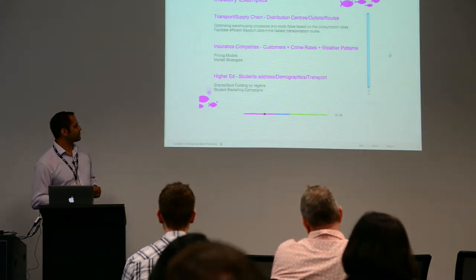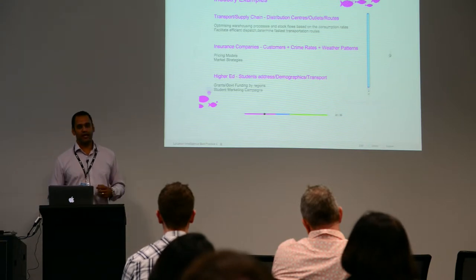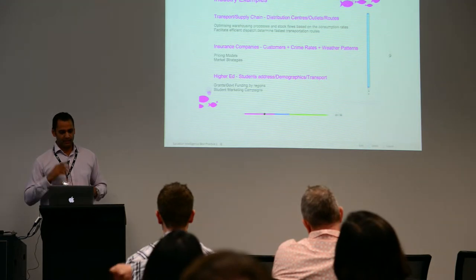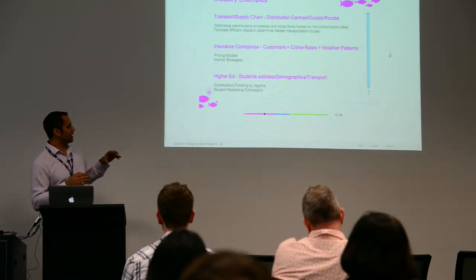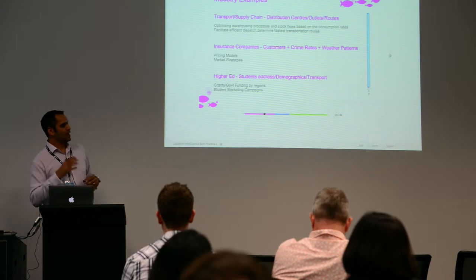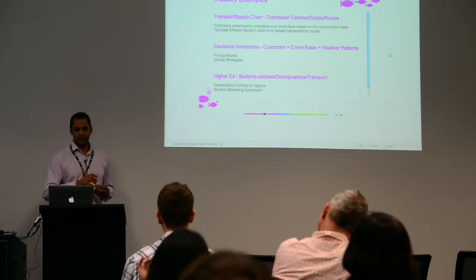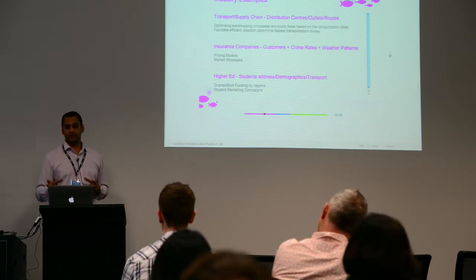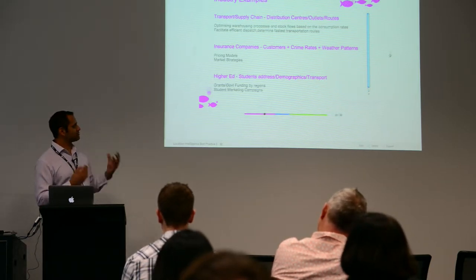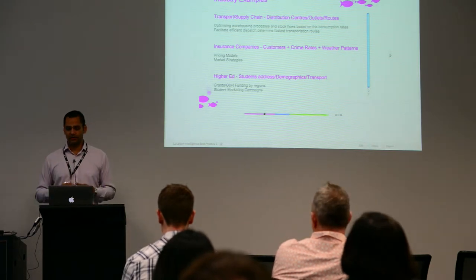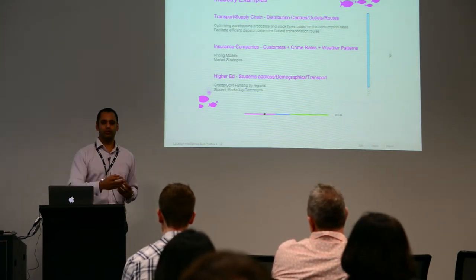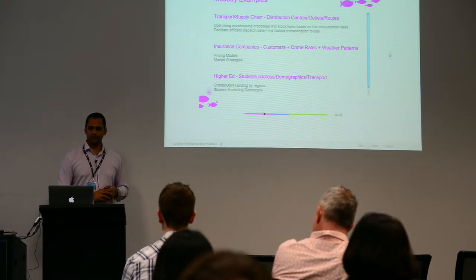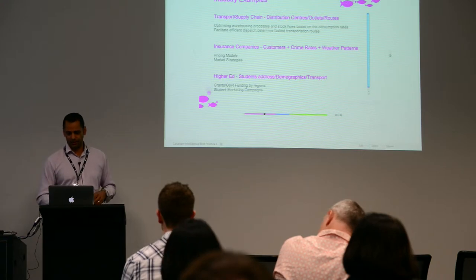Higher education is another use case. University customers use location intelligence to understand where their students are coming from, and what demographics they can target. Government funding is a big part of university operations, so understanding transport links — what current train and bus routes go to the university — helps drive influx of students. These are things we generally see in that sector.